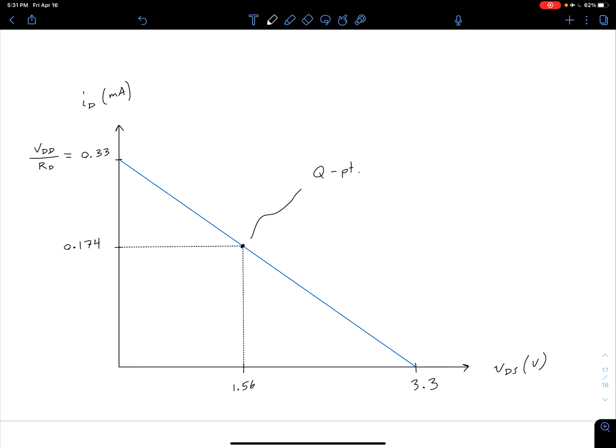We see, in general, we have our ID, our drain current, plotted against our drain-to-source voltage. And our load line is coming from our KVL around the drain-to-source loop.